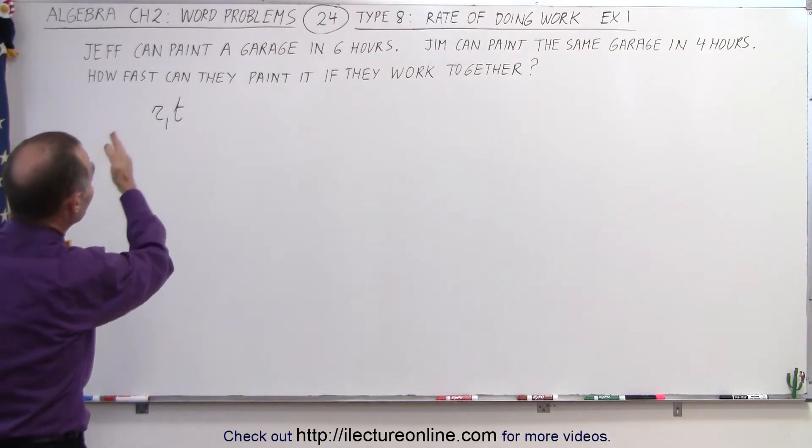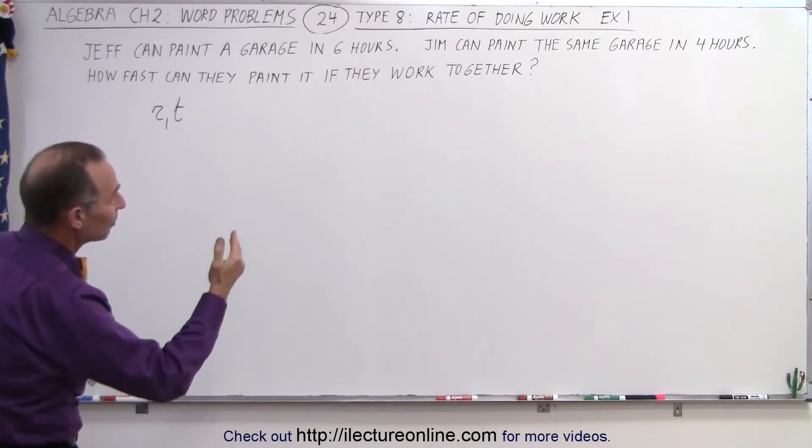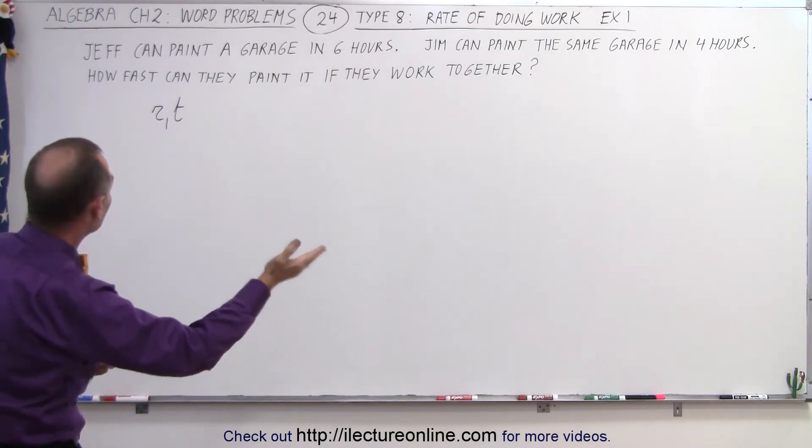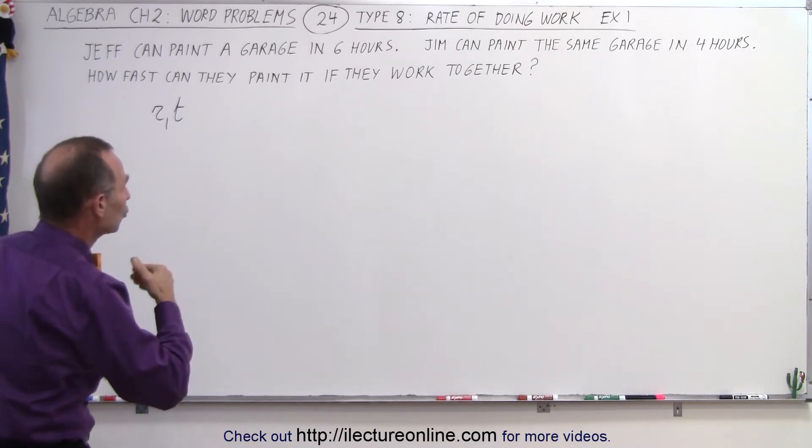Here it says that Jeff can paint a garage in six hours and Jim can paint the same garage in four hours. How fast can they paint if they work together?